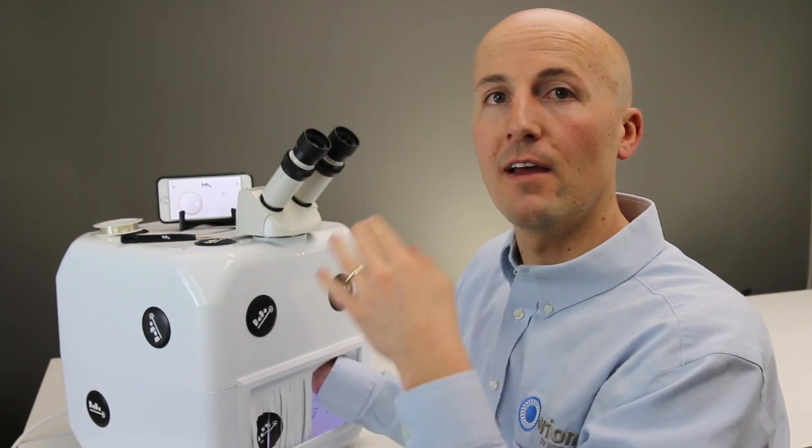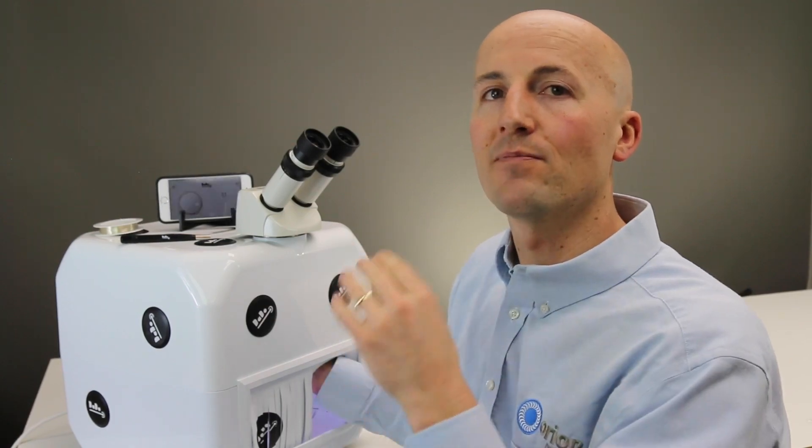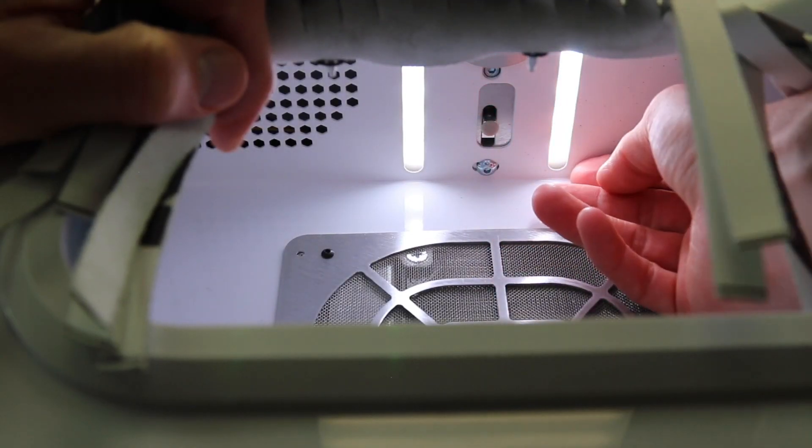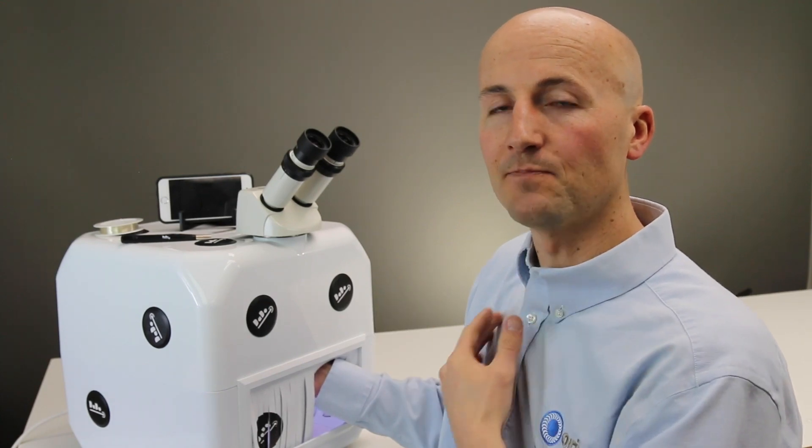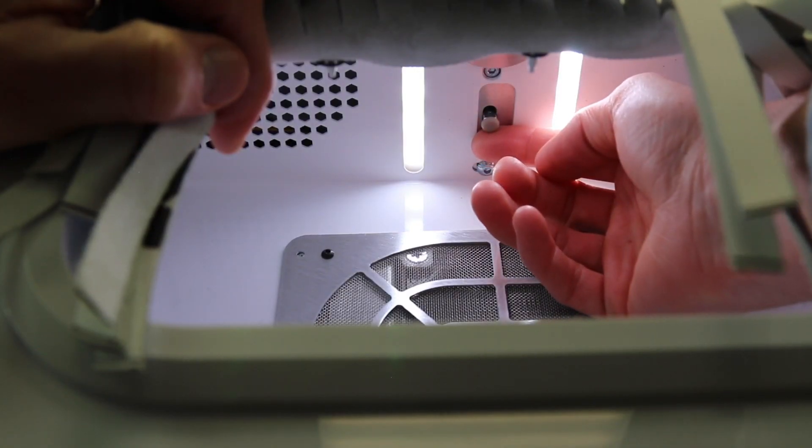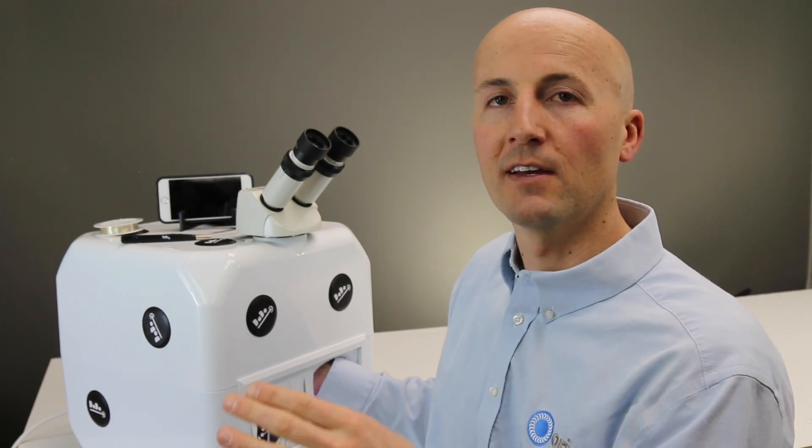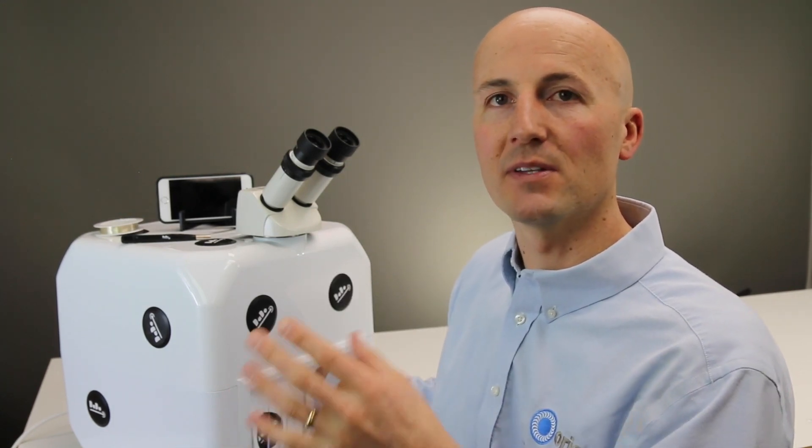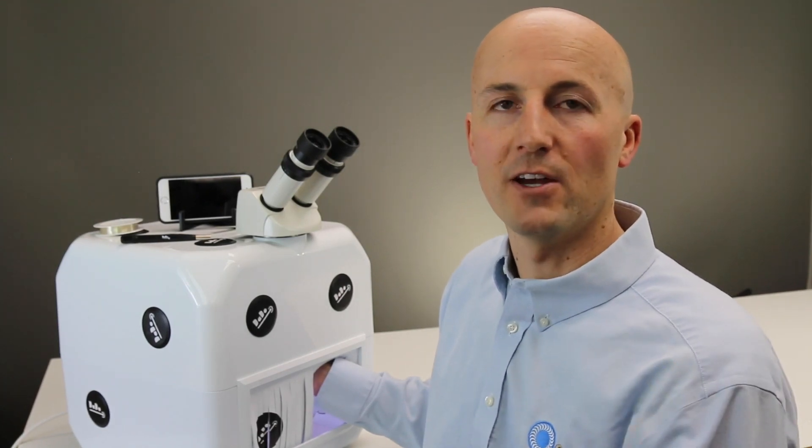So, if you have high power and that adjuster knob is pushed all the way to the back, it'll penetrate deeper into the metal. Now if I pull that all the way towards me, it opens the beam and makes it wider. And with that, you can use it more for smoothing. It won't penetrate as deep. It's going to be less powerful on the metal that you're welding.